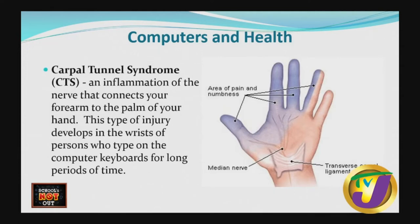Carpal tunnel syndrome is an inflammation of the nerve that connects your forearm to the palm of your hand. This type of injury develops in the wrists of persons who type on computer keyboards for very long periods of time. When you have CTS, you generally face some numbness in your fingers or the upper half part of your hand, and that is caused from the nerve being inflamed.